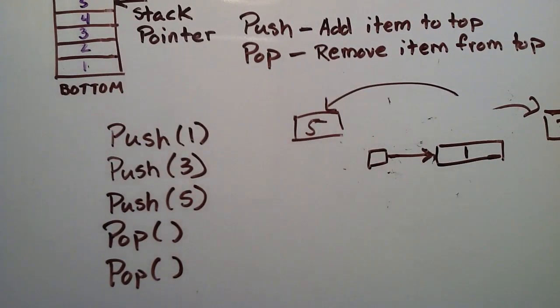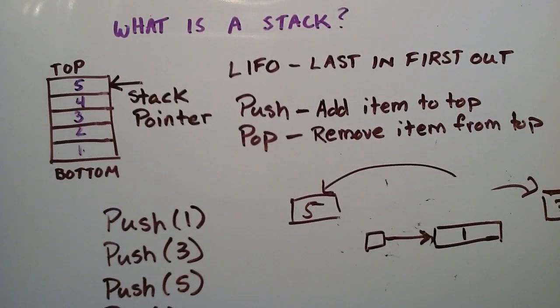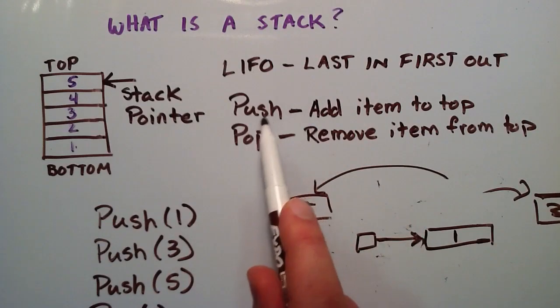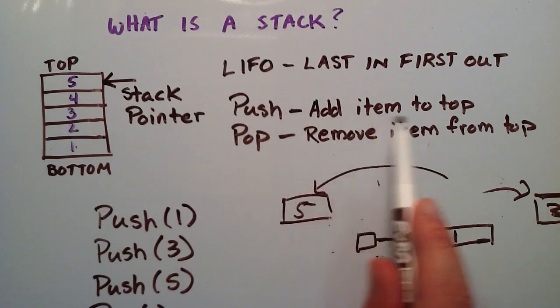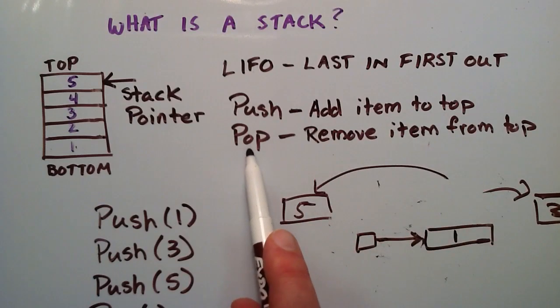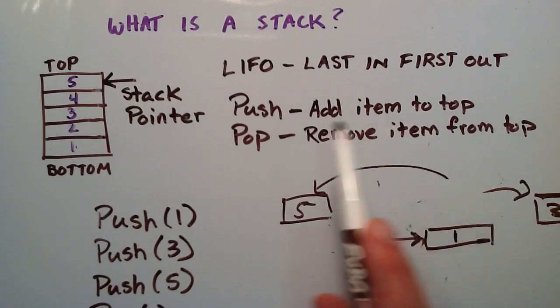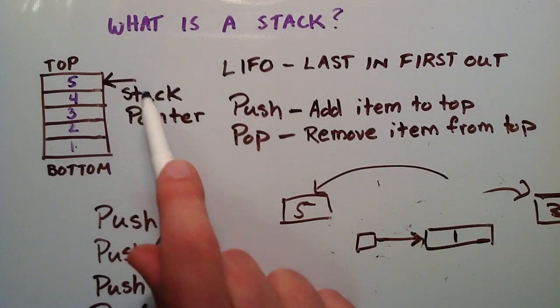That's the basic concept of a stack data structure. We're always adding and removing from the top of the stack and because of that it is a last in first out data structure. And the two things that you normally do with a stack are the push and the pop. A push adds an item to the top of the stack and a pop removes an item from the top of the stack. And we keep track of the top of the stack by a stack pointer.